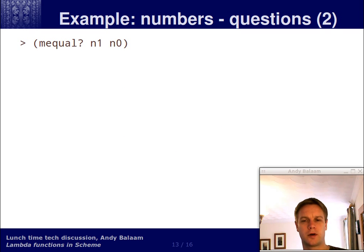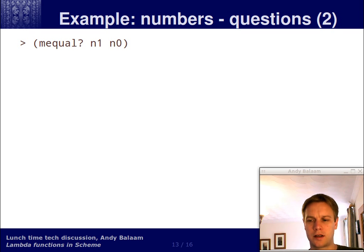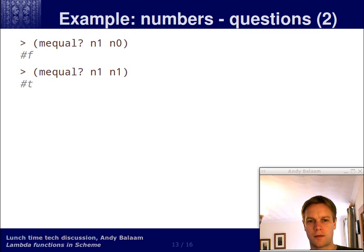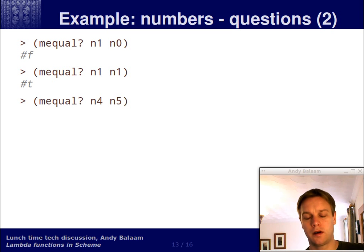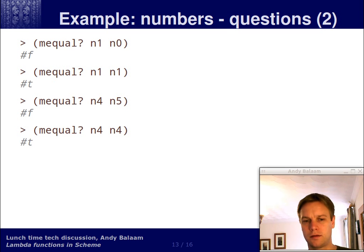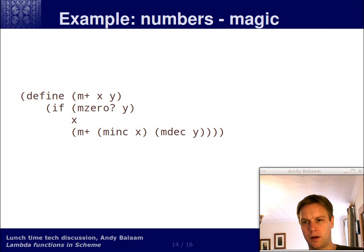So let's ask a few questions to find out where this gets us. Are n1 and n0 miquel? Well, the answer is no. But is n1 miquel to n1? The answer is yes — hash t means true, hash f means false. Is n4 miquel to n5? No. Is n4 miquel to n4? Yes. Okay, so let's do one more thing — the hard part. Let's define another procedure called mplus.